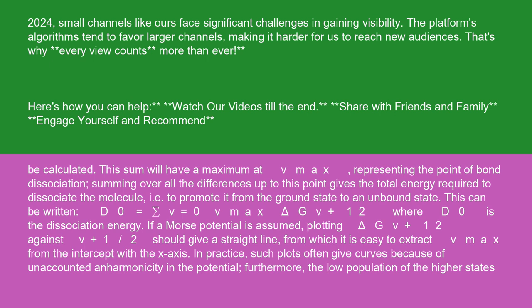Summing over all the differences up to this point gives the total energy required to dissociate the molecule, i.e., to promote it from the ground state to an unbound state. This can be written D₀ = Σ(v=0 to v_max) ΔG(v+1/2), where D₀ is the dissociation energy.